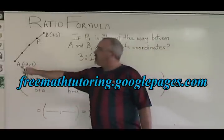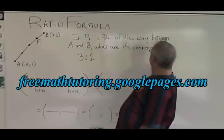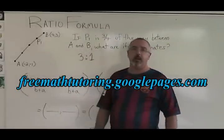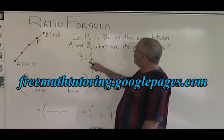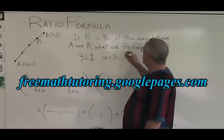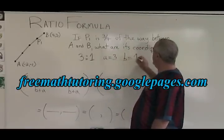Remember, we have to start at point A because the wording of the problem says between A and B, starting at A, ending at B. A 3:1 ratio means our little a in our formula is equal to 3, and our little b in the formula is equal to 1.